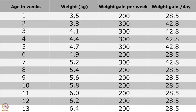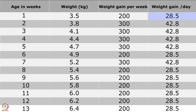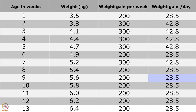Now, let's look at the average weight gain for a boy. One column shows the average weight gain per day and another shows the average weight gain per week. In the first week, weight gain is 28.5 grams per day — 200 grams total for the week. In the fifth week, it is 42.8 grams per day — 300 grams for the week. In the ninth week, it is 28.5 grams per day — 200 grams for the week.